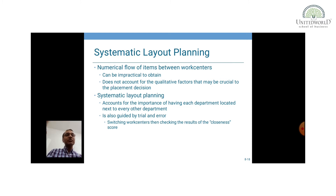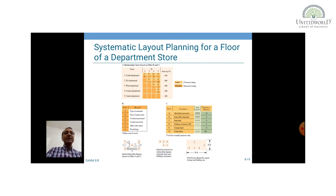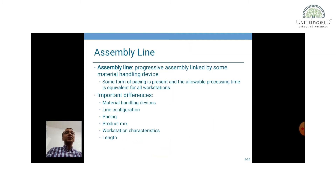There are a few examples here, such as systematic layout planning for a floor of a department store. As the name suggests, this needs to be done systematically and it is trial and error, but it can be done with the help of the available data. Then comes assembly line balancing — the third method, which is very widely used in many organizations. We will see many examples, and this can be solved manually as well as with the help of QM for Windows.